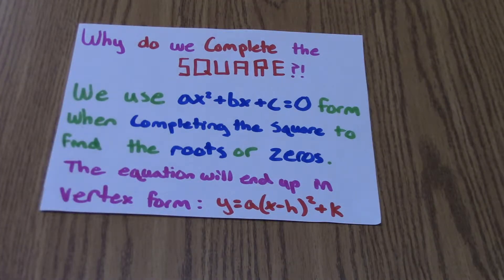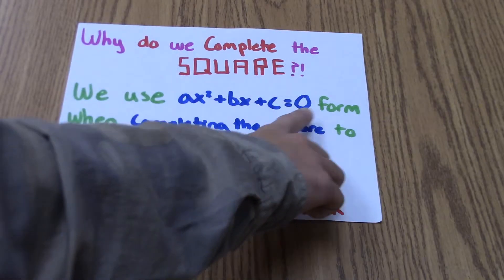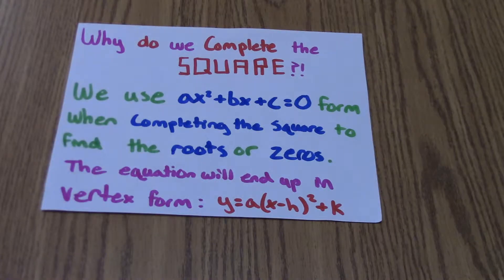Why do we complete the square? We use ax squared plus bx plus c equals zero form when completing the square to find the roots or zeros. You will end up in the vertex form, y equals a times x minus h squared plus k.